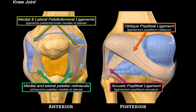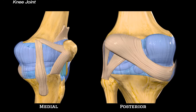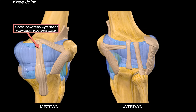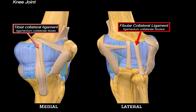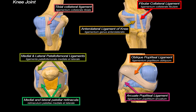Rotating to the medial side, we can see the tibial collateral ligament, and on the lateral side we can see the fibular collateral ligament. There is also another structure here called the anterolateral ligament of the knee, which is thought to contribute to rotational stability. So those are the main ligaments of the knee.